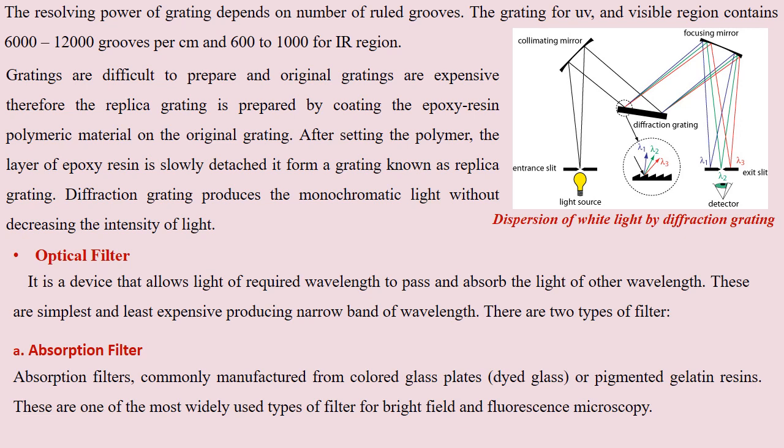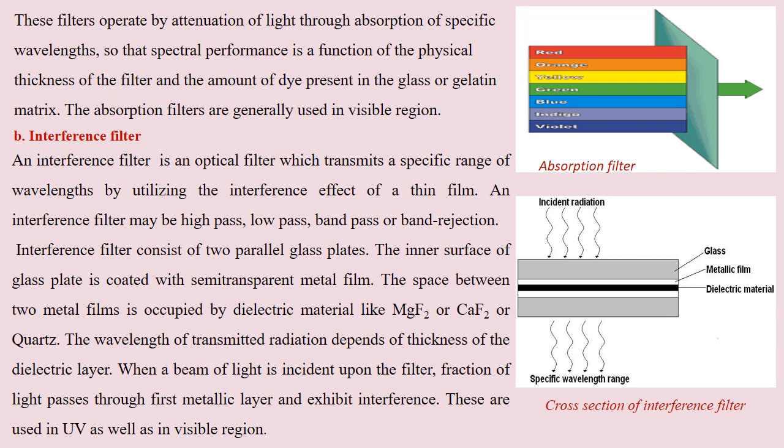Another way to obtain a desired wavelength of light radiation is an optical filter, which is the least expensive option and provides a narrow band of wavelength. The optical filter is of two types: first is the absorption filter and the second is the interference filter. As the name suggests, an absorption filter absorbs some particular light radiation and transmits selected light radiation. It is generally made up of glass plates, dyed glass, or pigmented gelatin resin material. Absorption filters operate by attenuation of light through absorption of specific wavelengths and are generally used in the visible region.